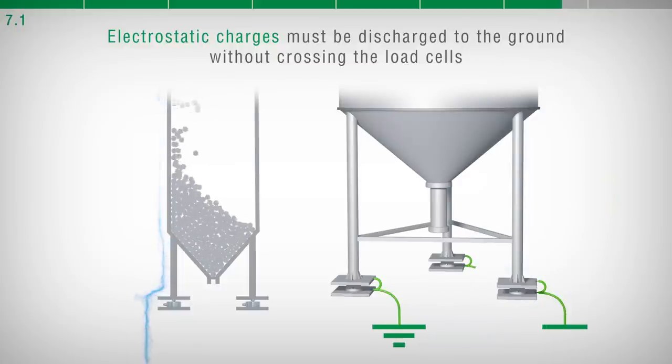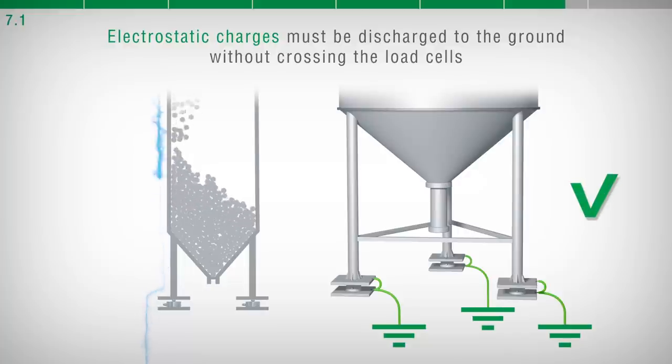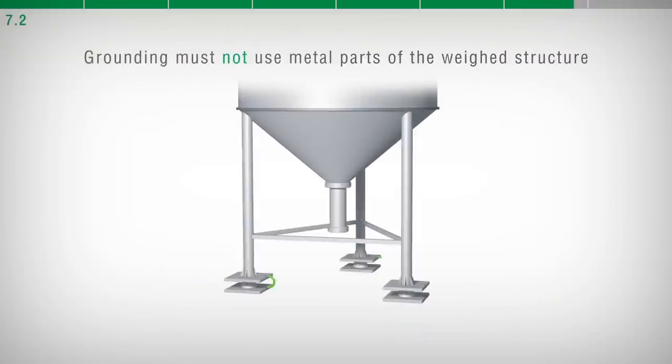Making a proper grounding system prevents damage to the load cells and to the devices connected to them. It is strictly forbidden to ensure grounding system continuity by using metal parts of the weight structure.